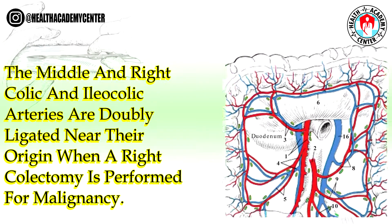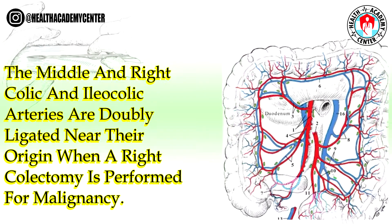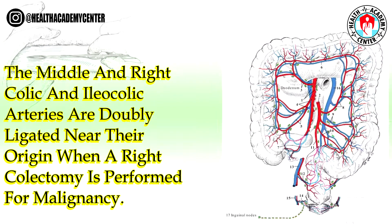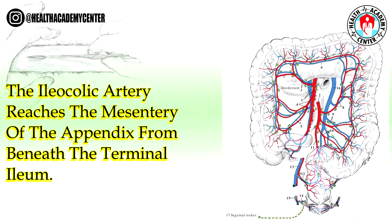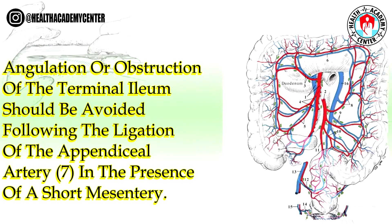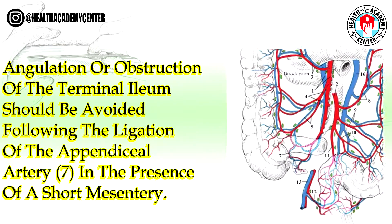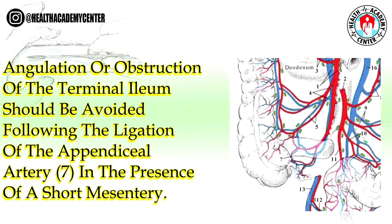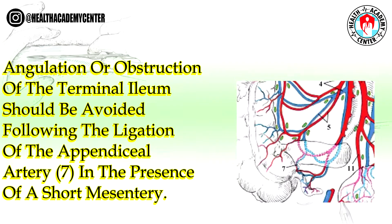The middle and right colic and iliocolic arteries are doubly ligated near their origin when a right colectomy is performed for malignancy. The iliocolic artery reaches the mesentery of the appendix from beneath the terminal ileum. Angulation or obstruction of the terminal ileum should be avoided following ligation of the appendiceal artery (7) in the presence of a short mesentery.